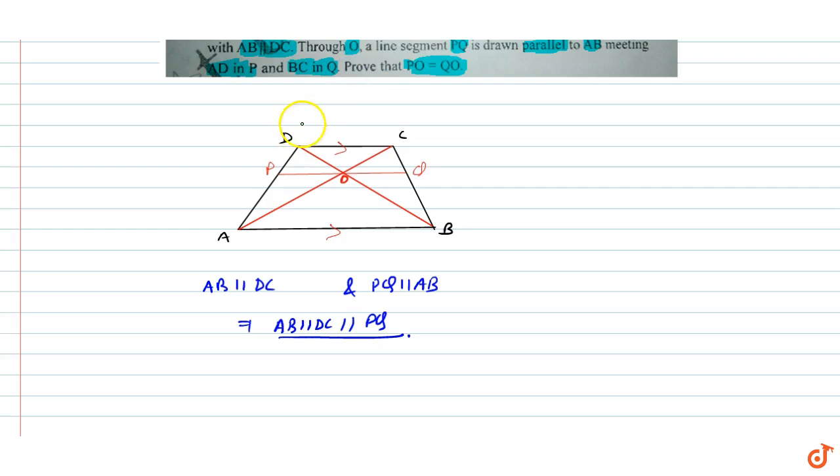Now we consider two triangles. If we have parallel lines, that means the lines are segmented proportionally. We can say DP upon DA equals CQ upon CB. This is equation 1.